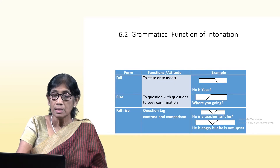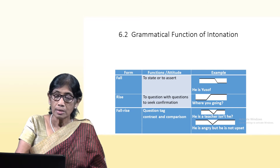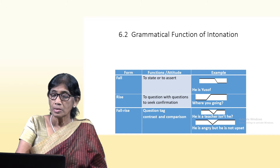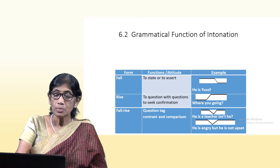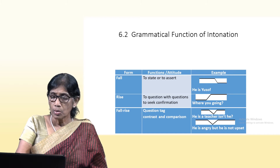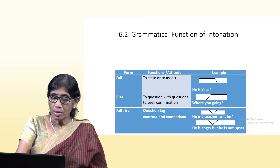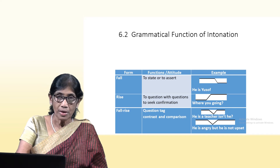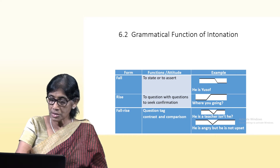Looking at grammatical functions of intonation: a falling tone is used to state or assert — for example, 'He is Yusuf.' A rising tone is used to question or seek confirmation — for example, 'Where are you going?' A fall-rise is used for question tags, contrast, and comparison.